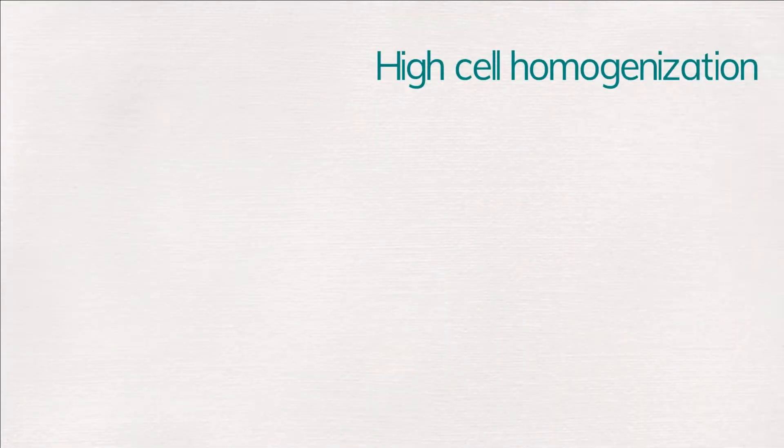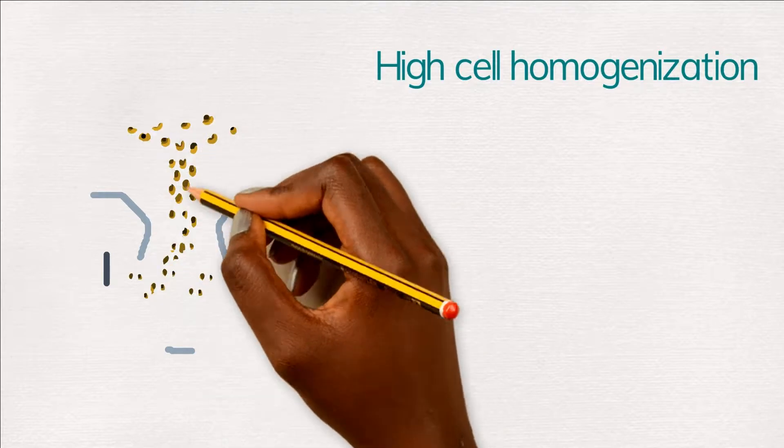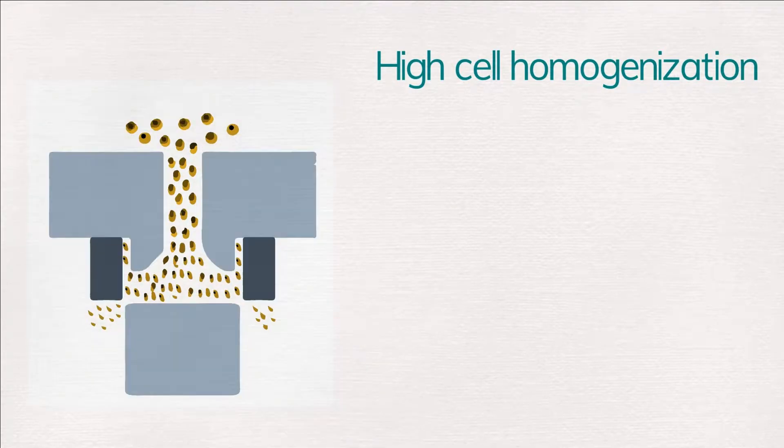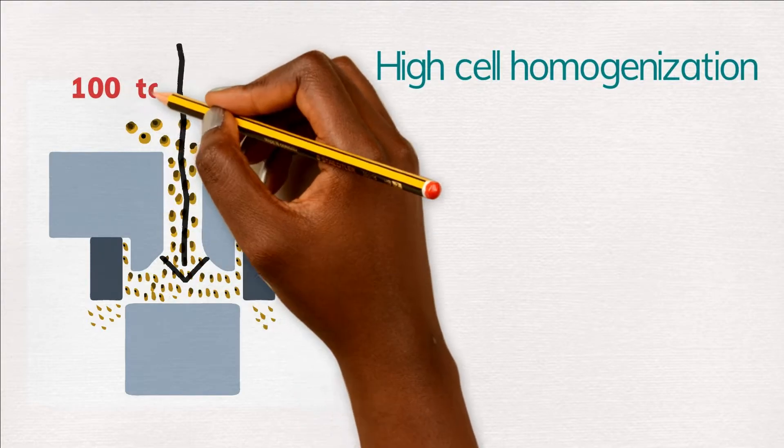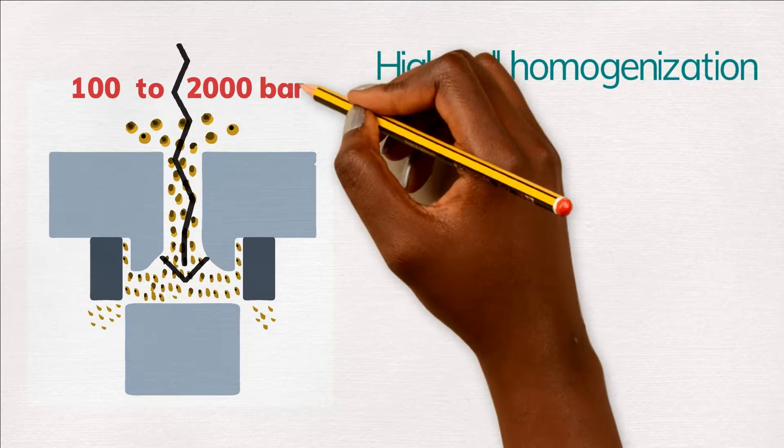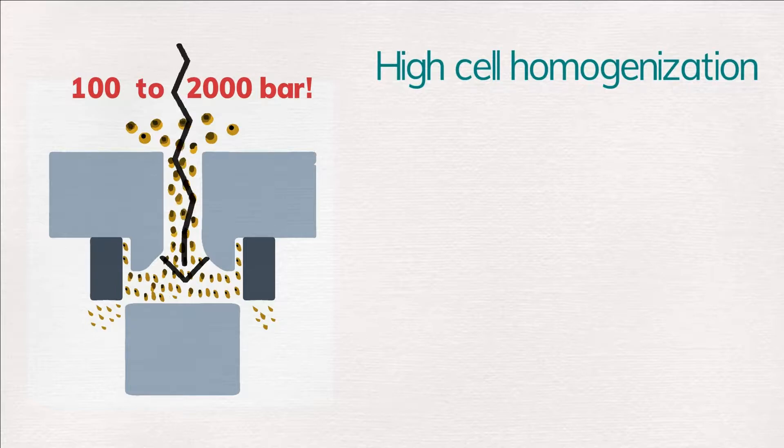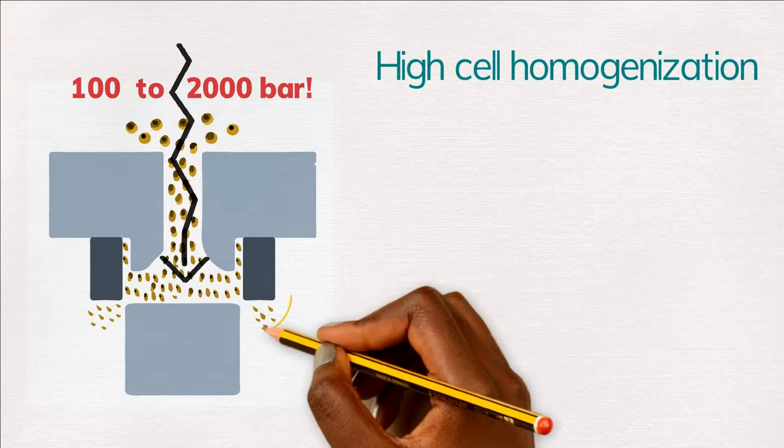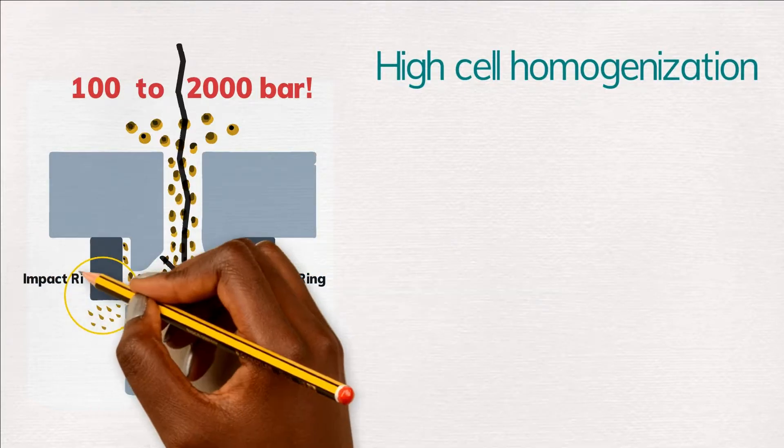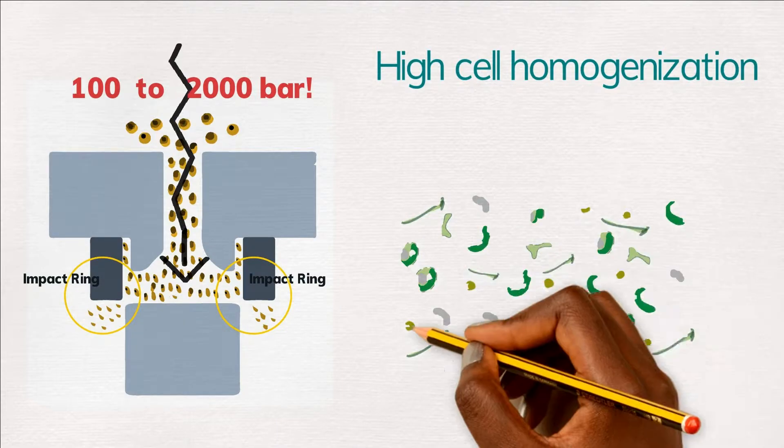High cell homogenization is an efficient and sophisticated technology that pushes liquids through a narrow gap at a high pressure that can range from one hundred to two thousand bar. Particles then accelerate in a very short distance and collide in the impact ring, suffering from disruption.